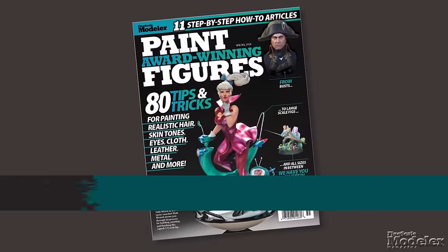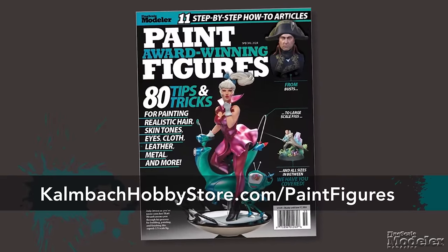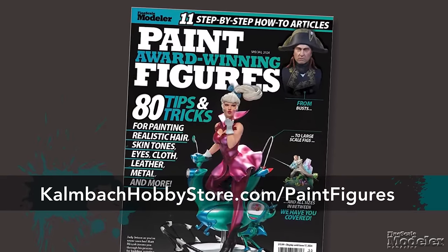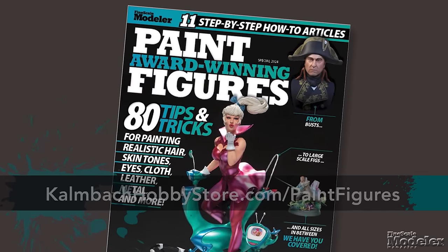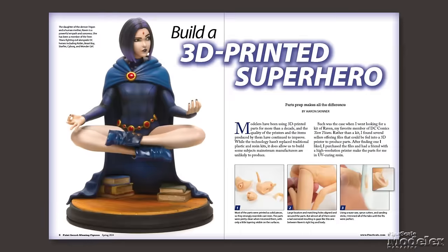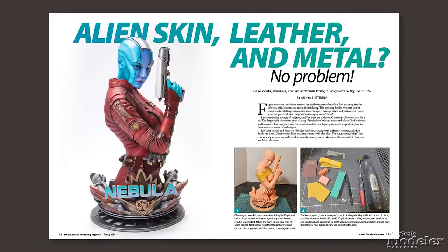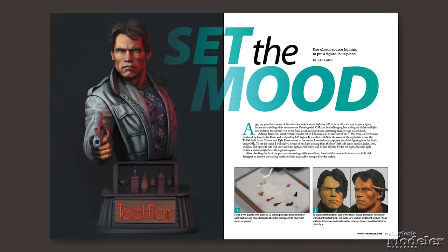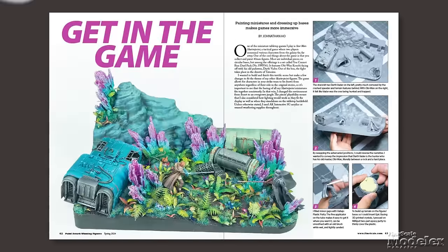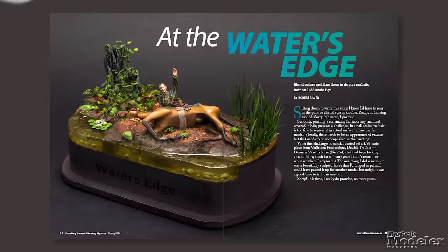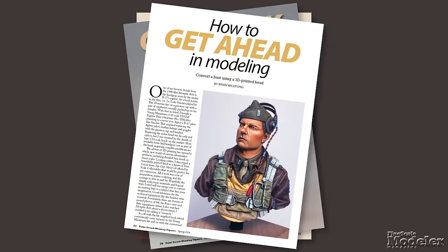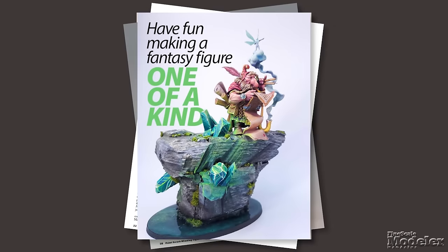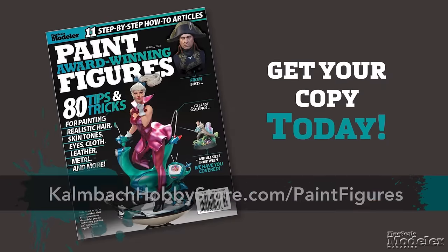It's here, Fine Scale Modeler's new special issue: Paint Award-Winning Figures. You can find it at your local hobby store, bookstore, or newsstand, or you can order it directly from us at the link in the description. Inside you're going to find a hundred pages of figure modeling goodness from the likes of Joe Hudson, Matt Mrozik, and Anya Shetnina. There are 11 how-to stories packed with great insights about how to paint, attach parts, everything you need to build better figure models. Get your copy today.